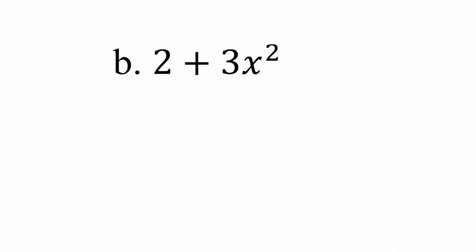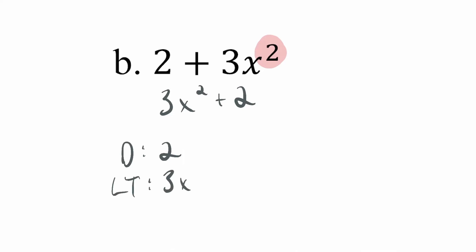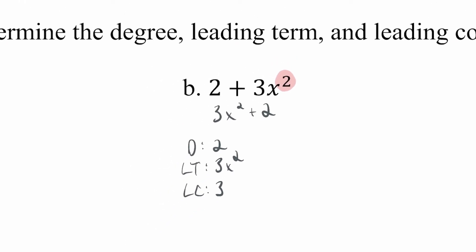For the next example, I have more than one term. When looking for the leading term, I need to identify the biggest degree on the page. This polynomial is not in descending order — typically the highest degree term goes first. I could rewrite this as 3x² + 2. The degree is 2, the leading term is 3x², and the leading coefficient is 3. Always pay attention to the order — don't just go to the first term as written.